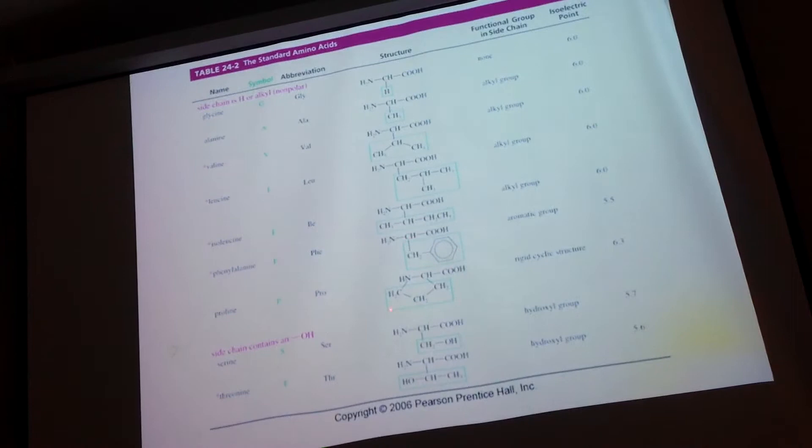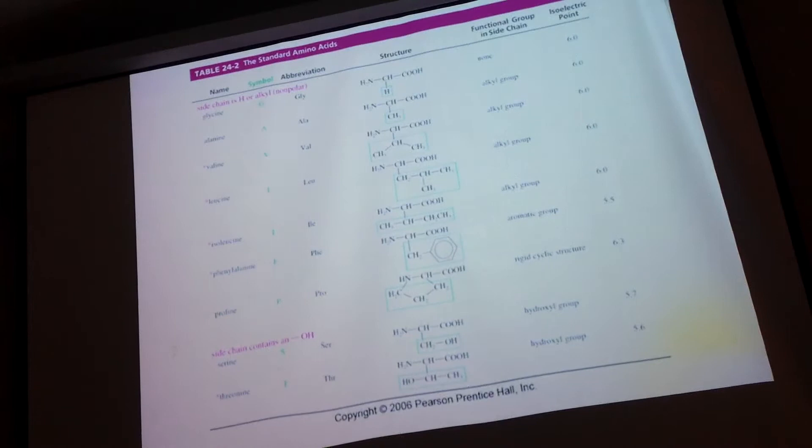Down here you're getting into groups with an OH, which you could deprotonate at something like pH 16 to 19 — that's not going to happen inside of you. At biological pH, that's just an OH, which is why those are classified as neutral.